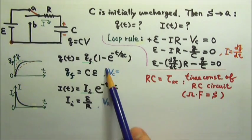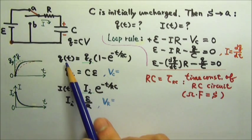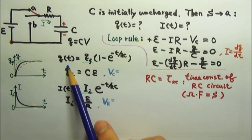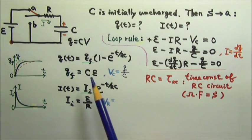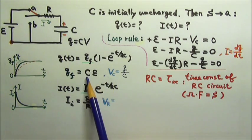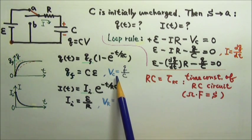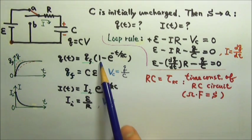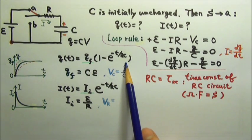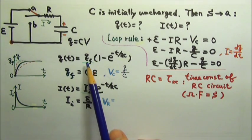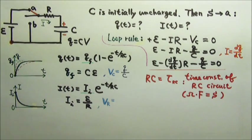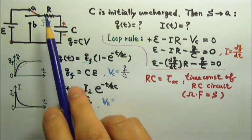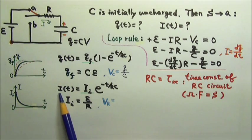Sometimes a problem may ask you about the voltage across the capacitor instead of the charge. In that case, all we have to do is use V equals Q over C. So everything will be the same except you divide by C, and the voltage across the capacitor will also be a 1 minus exponential decay. What goes here will be the final voltage, which is the final charge divided by C — and that's the EMF.